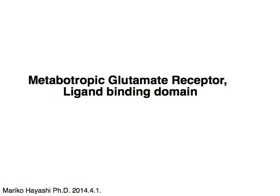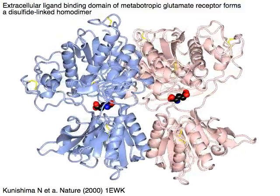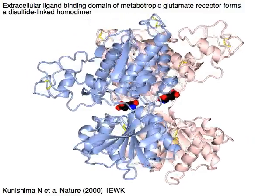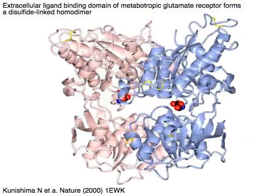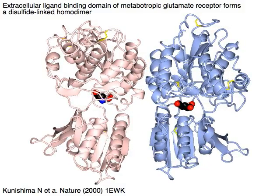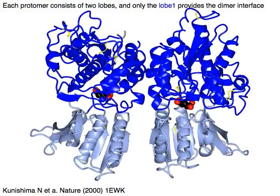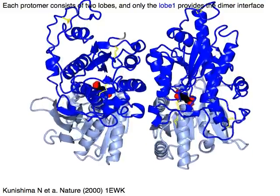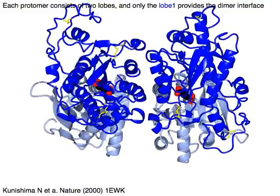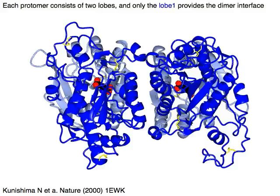Metabotropic Glutamate Receptor, Ligand Binding Domain. The extracellular ligand binding domain of the metabotropic glutamate receptor forms a disulfide-linked homodimer, shown in pink and light blue. Each protomere consists of two lobes in blue and light blue, and only lobe one in blue provides the dimer interface.